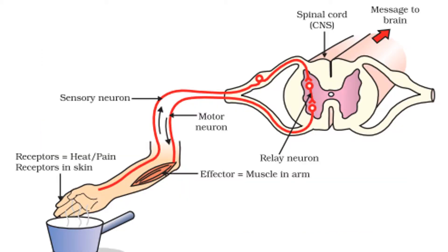This diagram here shows a reflex arc. Reflex actions occur when the safety of an organism requires a really fast response, like quickly pulling your hand away from a hot pan. We have receptors in the skin which detect the temperature change. We have a sensory neuron where the action potential — the electrical impulse — moves up the sensory neuron into the spine, into the CNS, the central nervous system. It goes through this relay neuron back to a motor neuron and into an effector. Effectors tend to be muscles or glands.